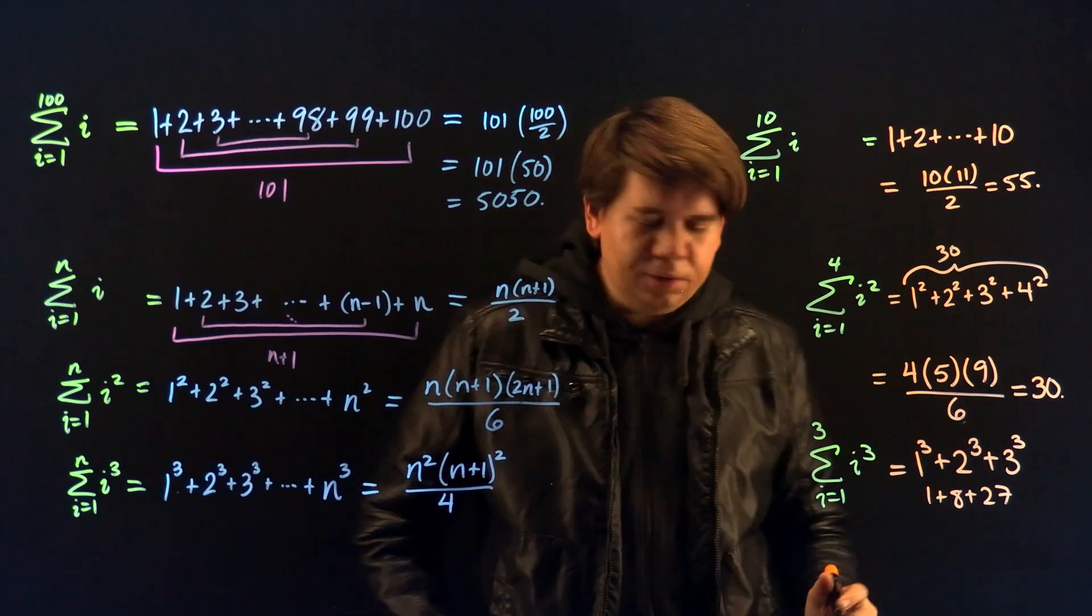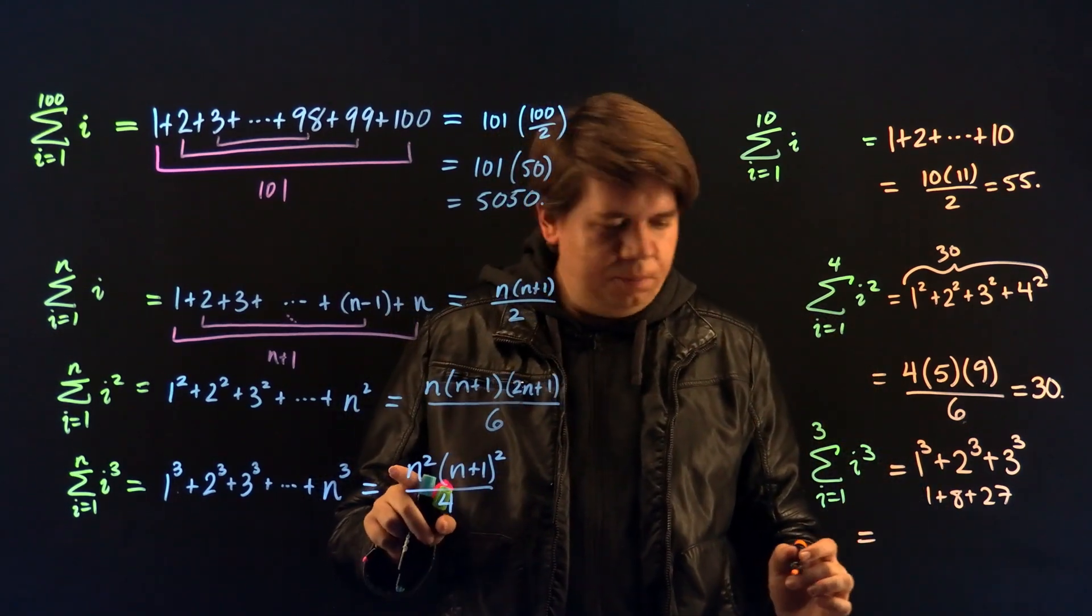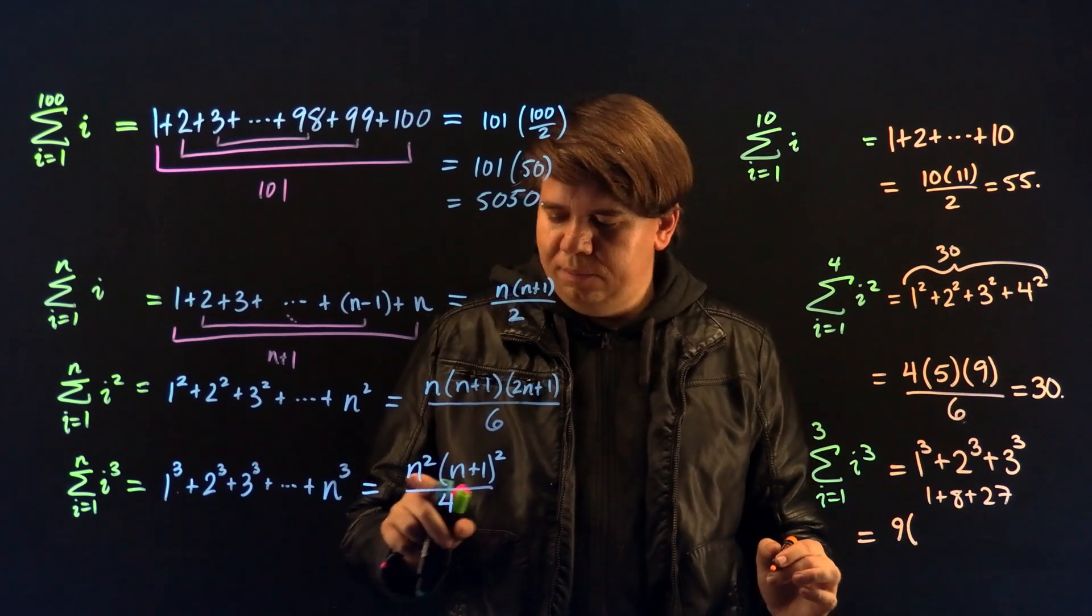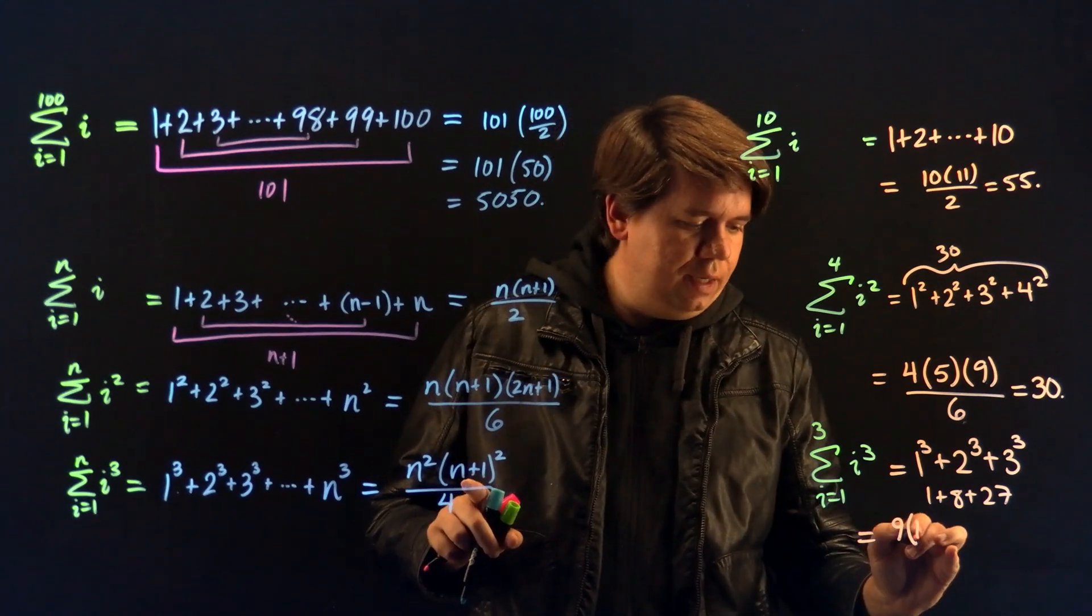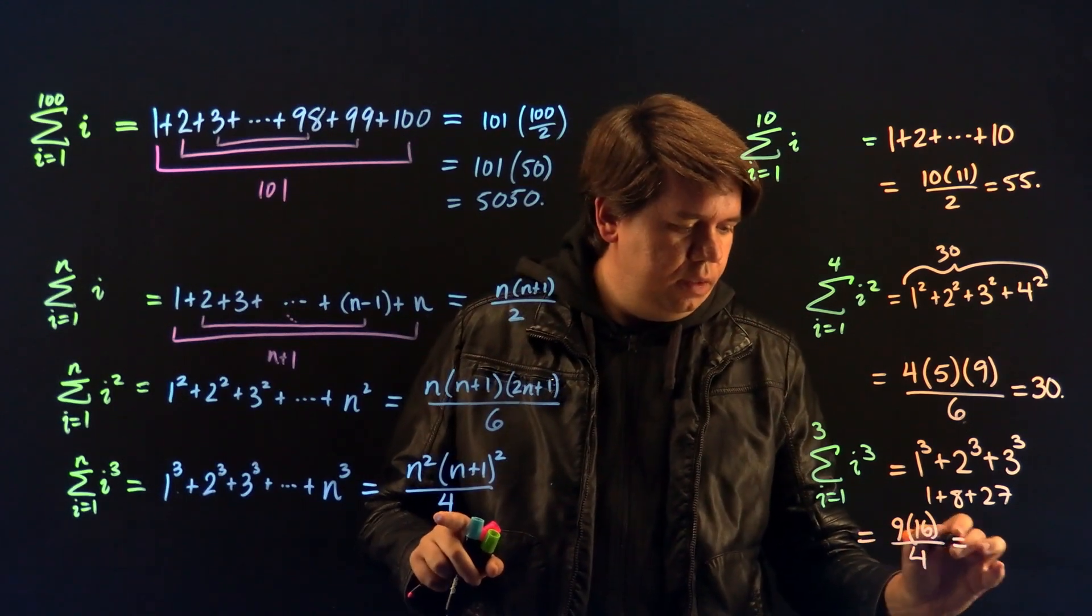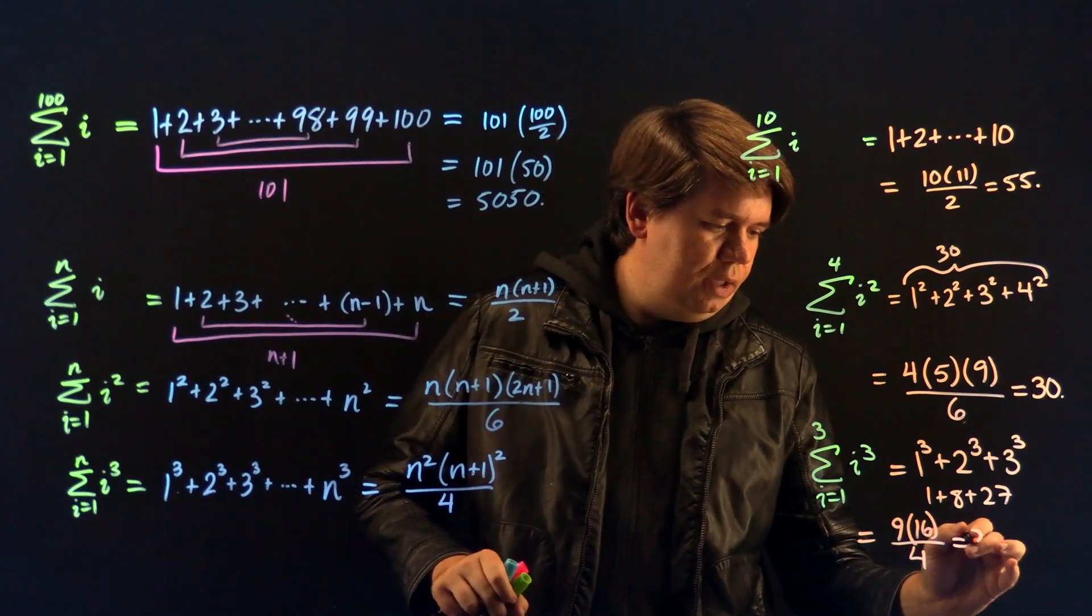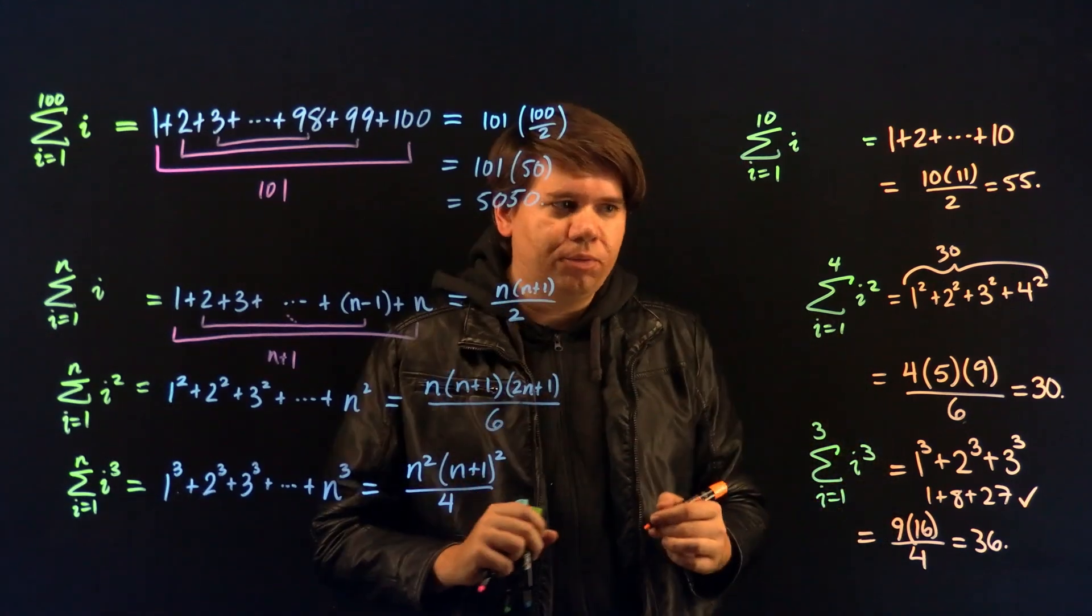So not hard to figure that out. But let's double check that our formula works. According to our formula, this should be 3 squared, n squared, so that's 9, times n plus 1, that's 3 plus 1, that's 4 squared, so it's 9 times 16, all over 4. 16 divided by 4 is 4, so it's 9 times 4, which again is 36, agreeing with what we had above. So these formulas work.